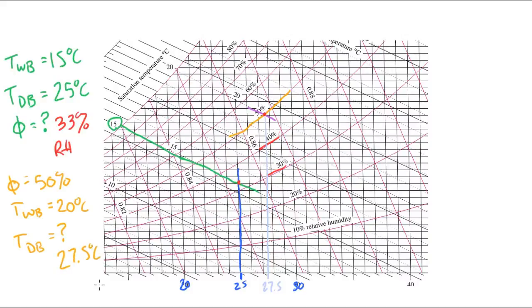So that's pretty much all there is to the psychrometric chart. It's a handy graphical tool to find other data given two data points.